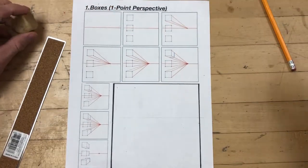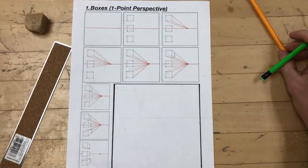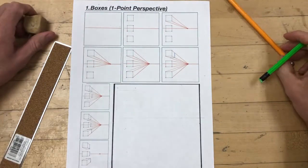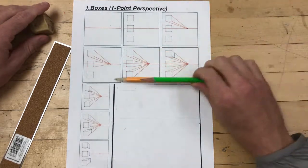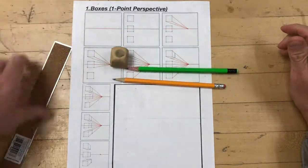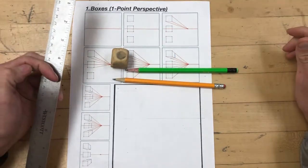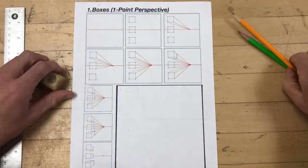Hello, we're going to demonstrate how to draw boxes using one-point linear perspective. Before we get started, I recommend having all the supplies you need: the one-point boxes worksheet, a couple of wooden pencils sharpened and ready to go, an eraser, and a ruler as your straight edge.